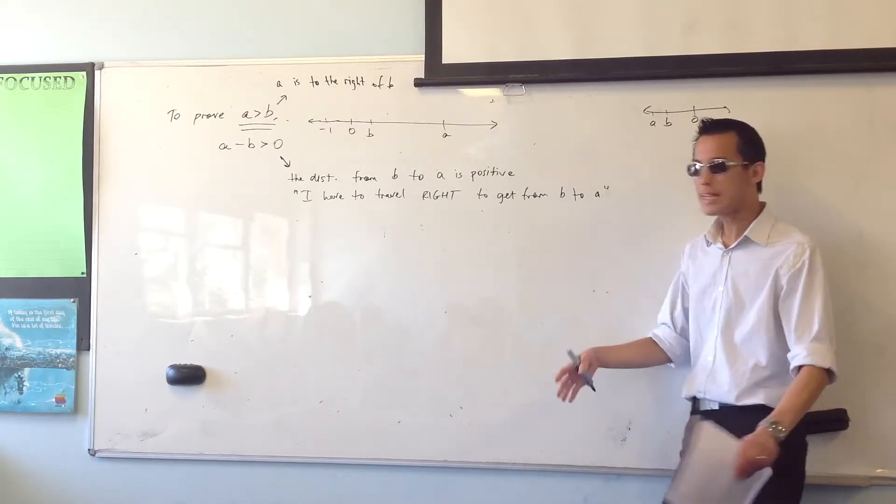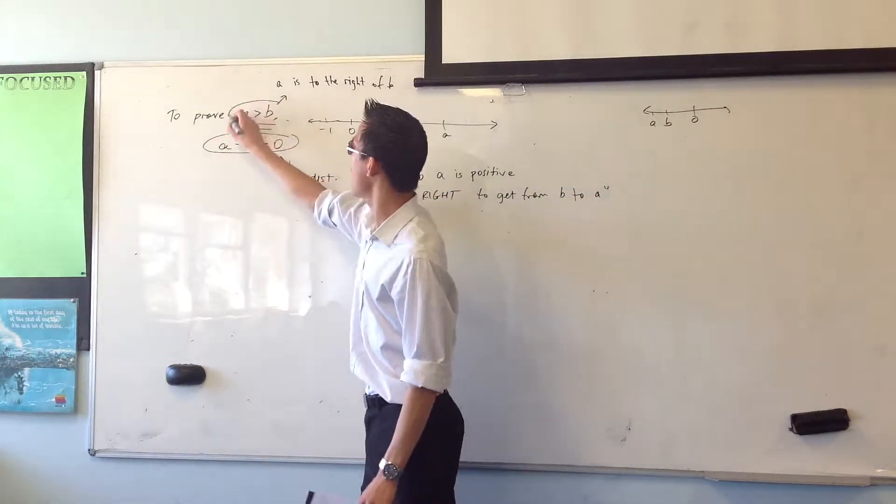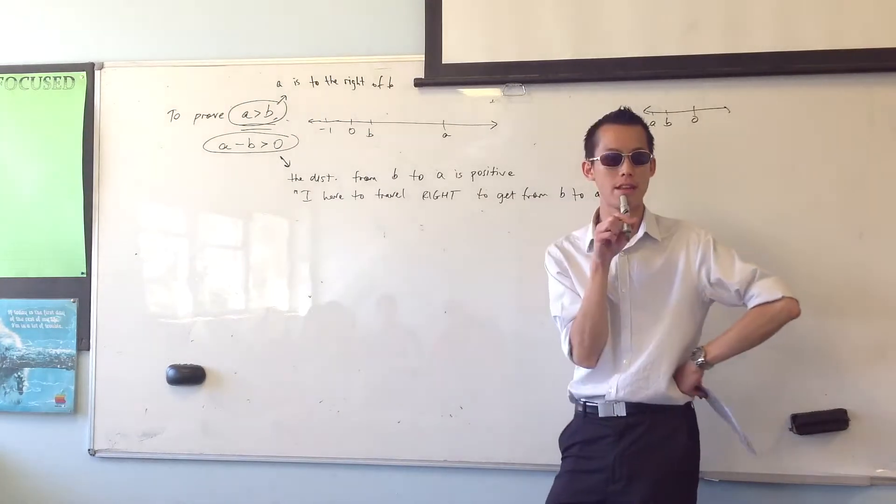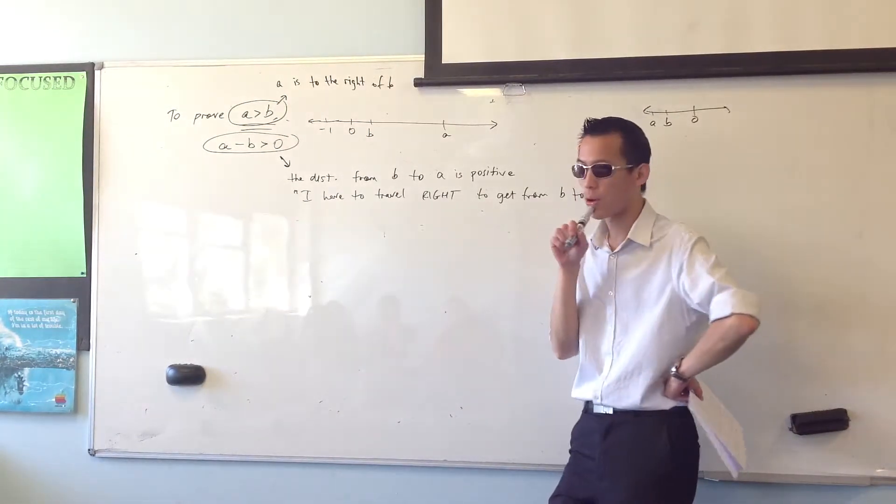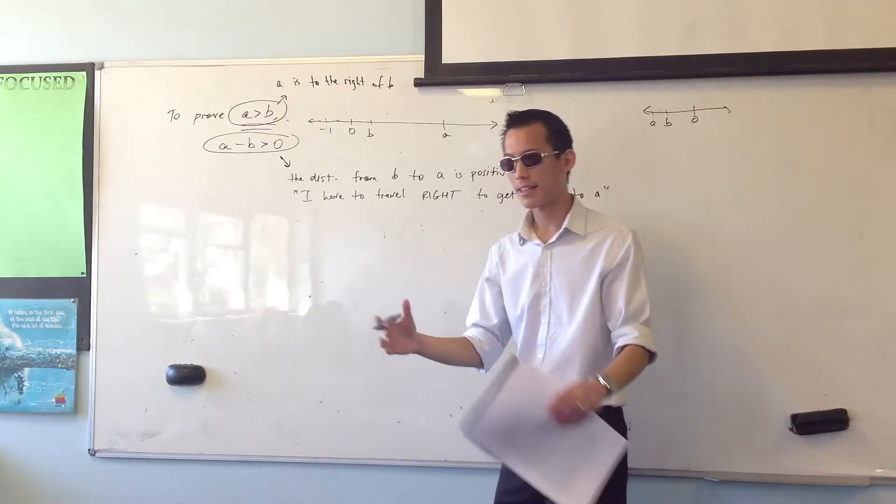Now, the reason why it's more in our interests, right, to say things like this than this, okay, is that it's actually quite easy to prove that things are greater than zero. Okay? We know all kinds of properties that will help us. And the most important one is squaring. Okay? So what I can say is,